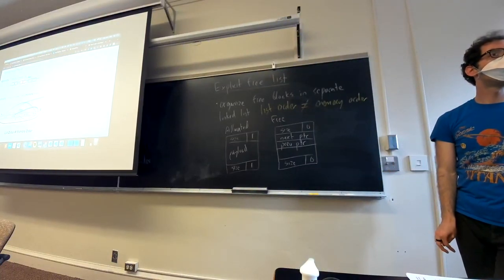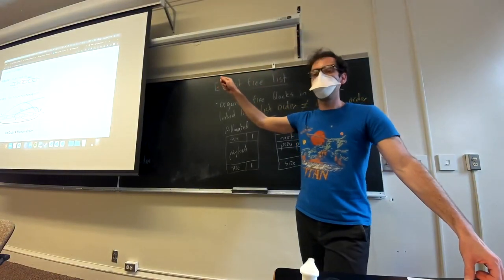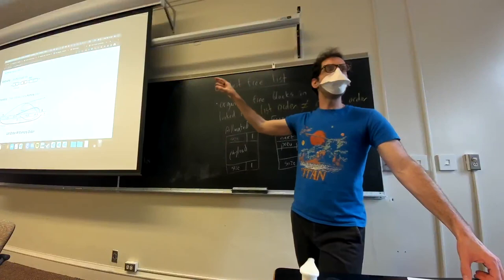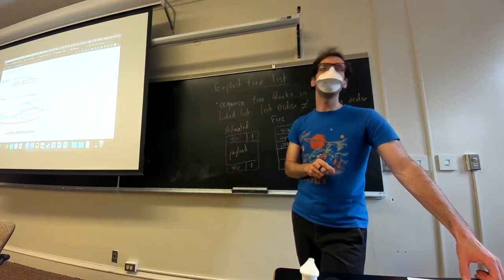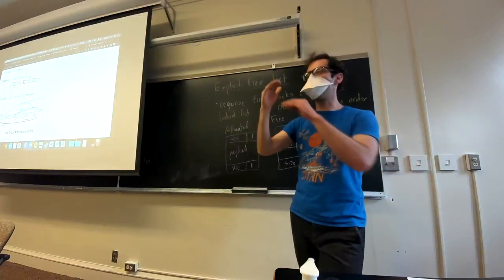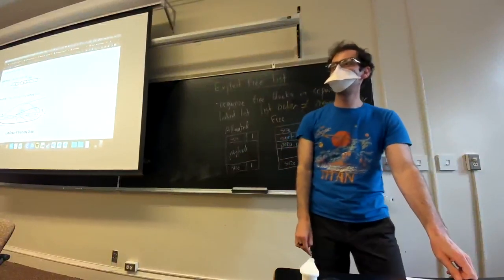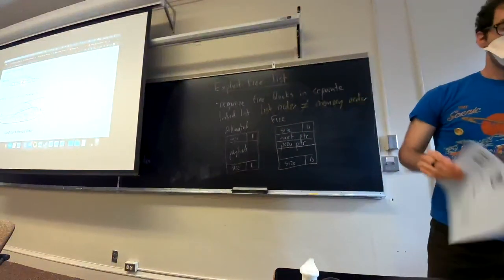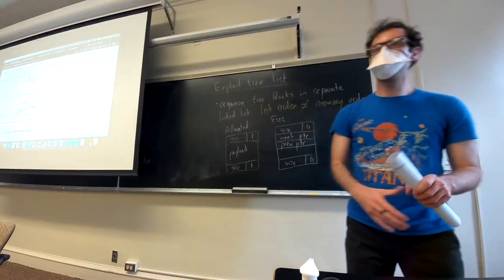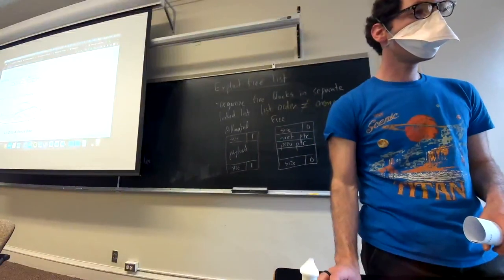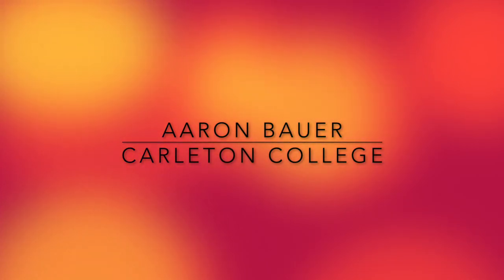The explicit free list may change our minimum block size, because we need to ensure every block has space for the next and previous pointers. When using an explicit free list, we don't want any block with a payload less than 16 bytes, because it wouldn't have space for these pointers. That's all for today — I'll have office hours tomorrow evening in the lab and see you Wednesday.